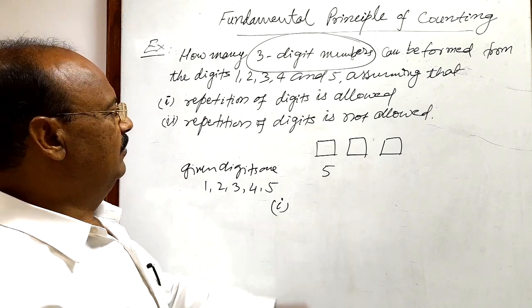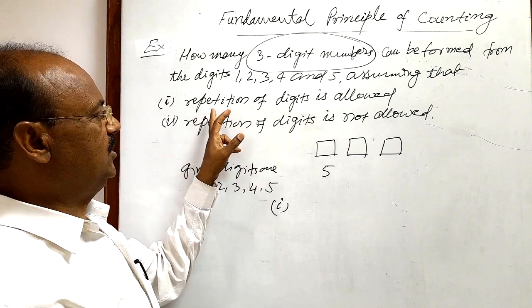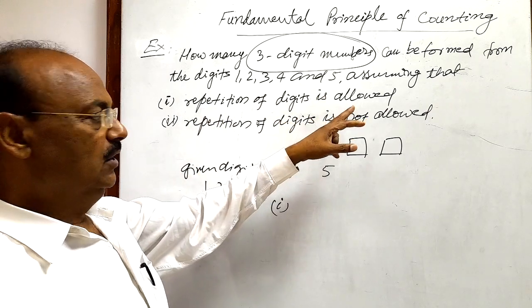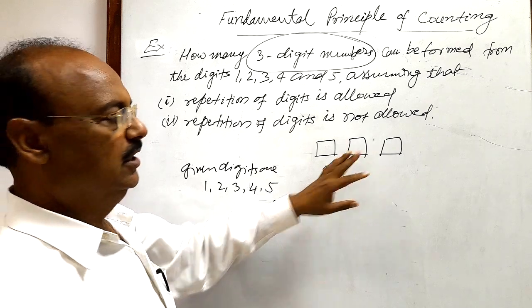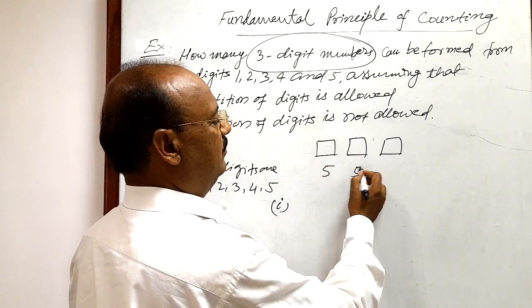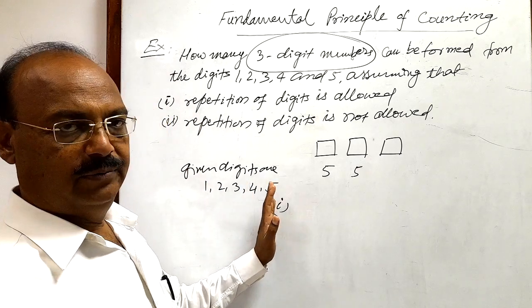You have to take care of the condition: repetition of digits allowed. So the digit which has been used here can be reused. So this place can also be filled up in five different ways by any one of 1, 2, 3, 4, or 5 digits.